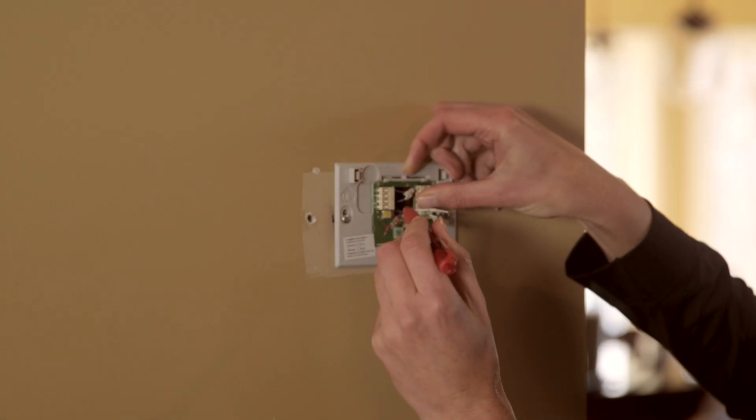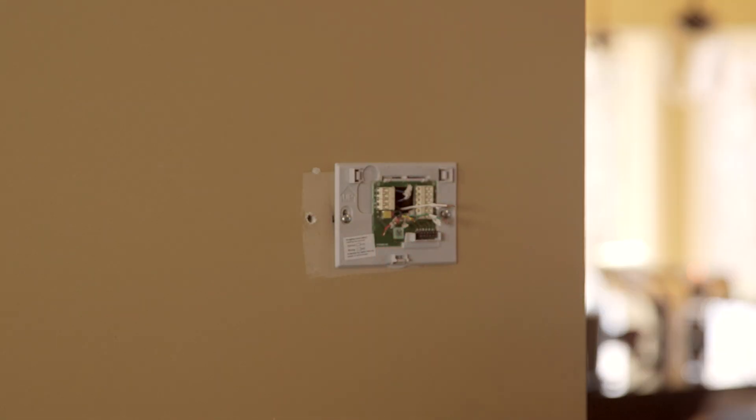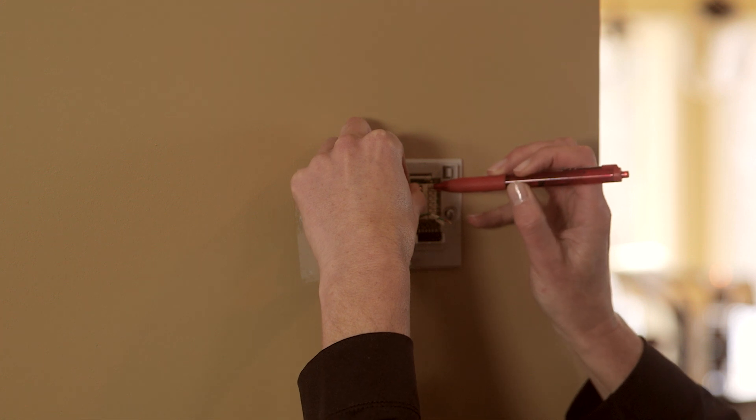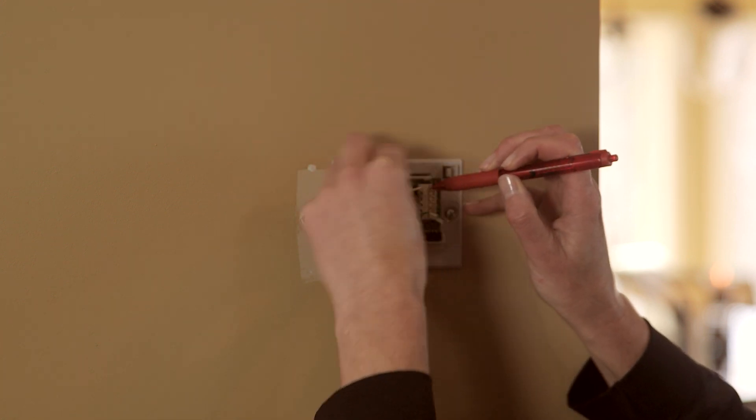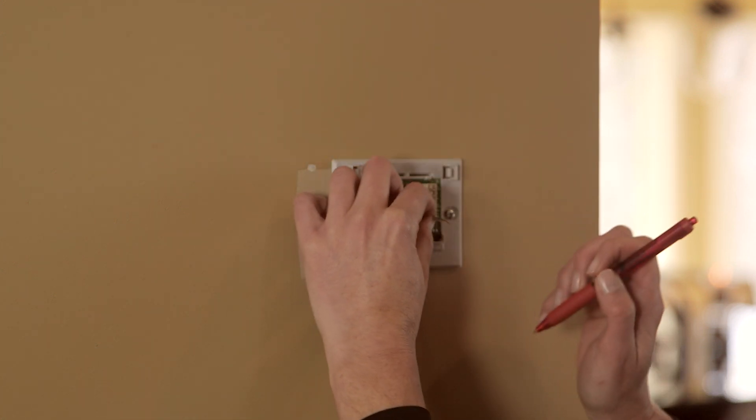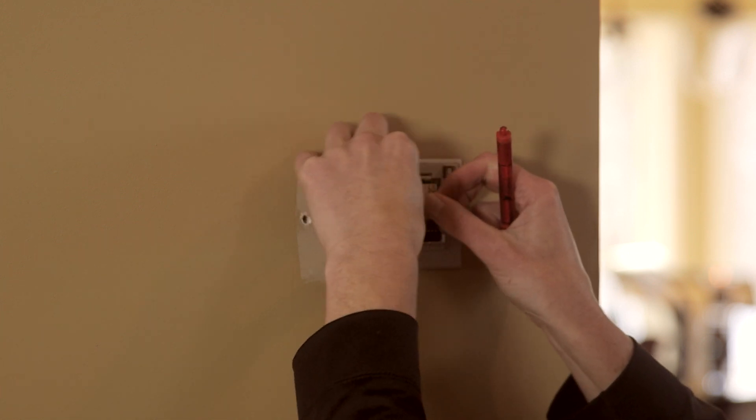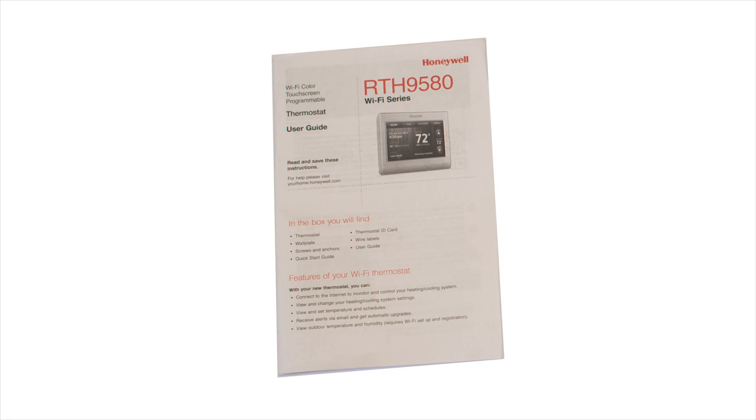Connect the wires to the designated terminals on your new wall plate by gently sliding the wires into the terminal holes. Pressing down on the terminal release with a pen might make this easier. Refer to the wiring section of your user guide if you need assistance with wiring.